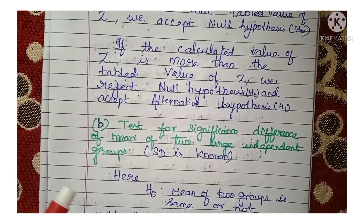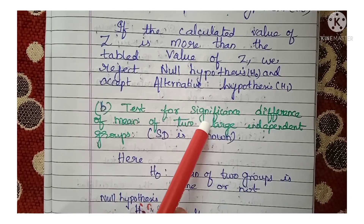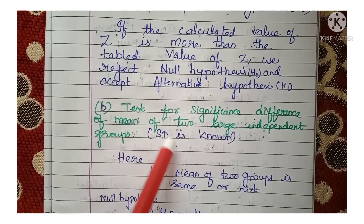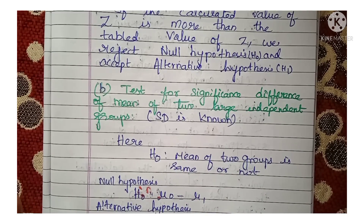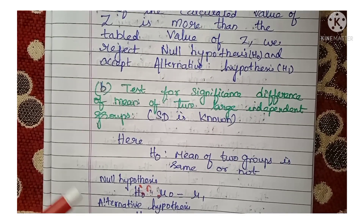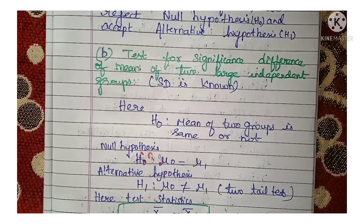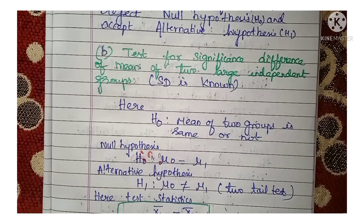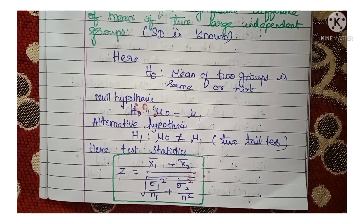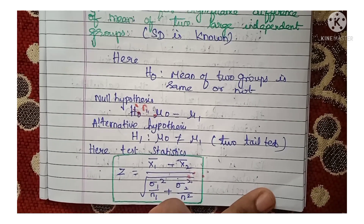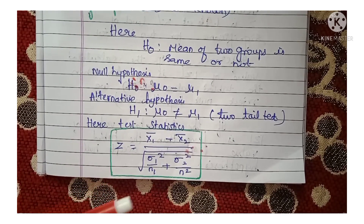Next, we look at testing for significance of difference of mean of two large independent groups when standard deviation is known. Here we want to find out whether the means of the two groups are the same or not. The null hypothesis H₀ is: mu₁ equals mu₂ — both group means are equal. The alternate hypothesis H1 states that mu₁ is not equal to mu₂, meaning it can be less or more, so this also comes under a two-tailed test.